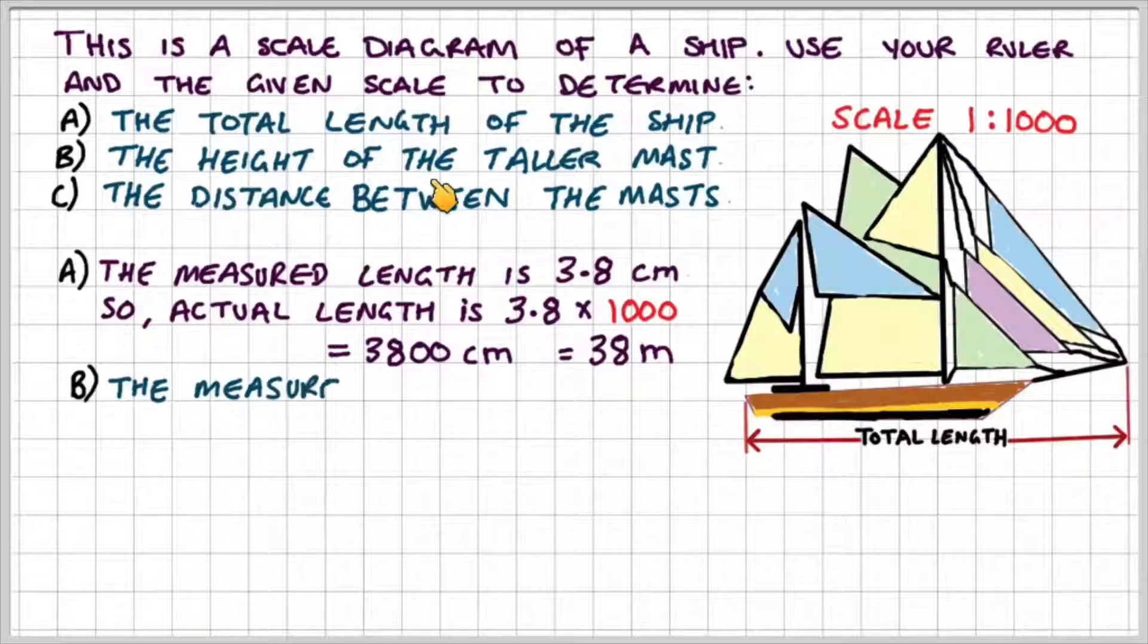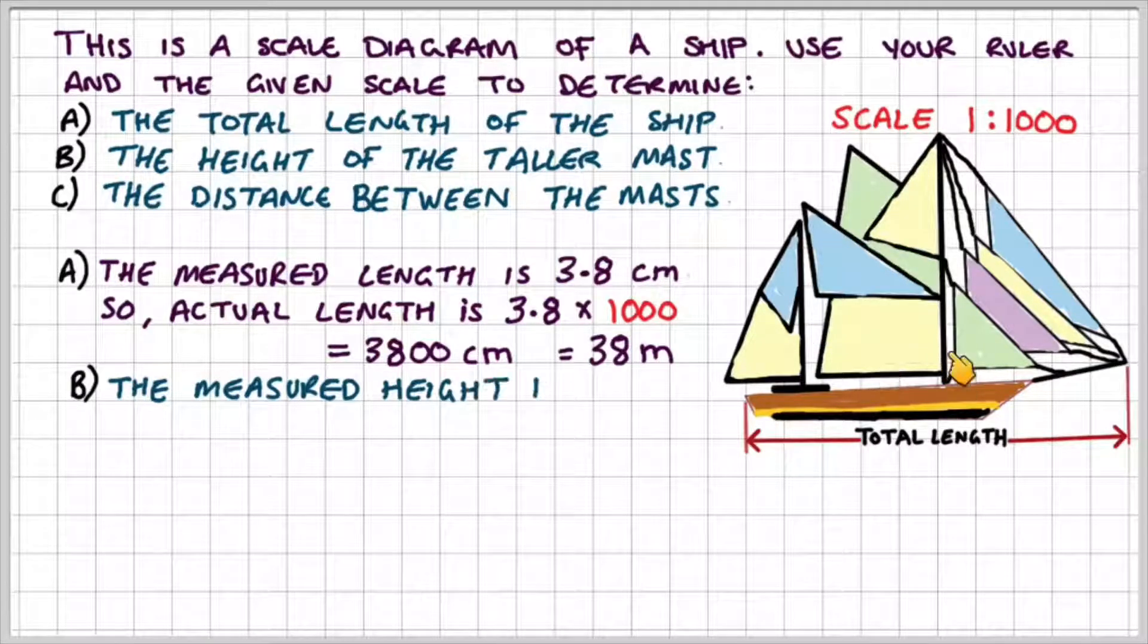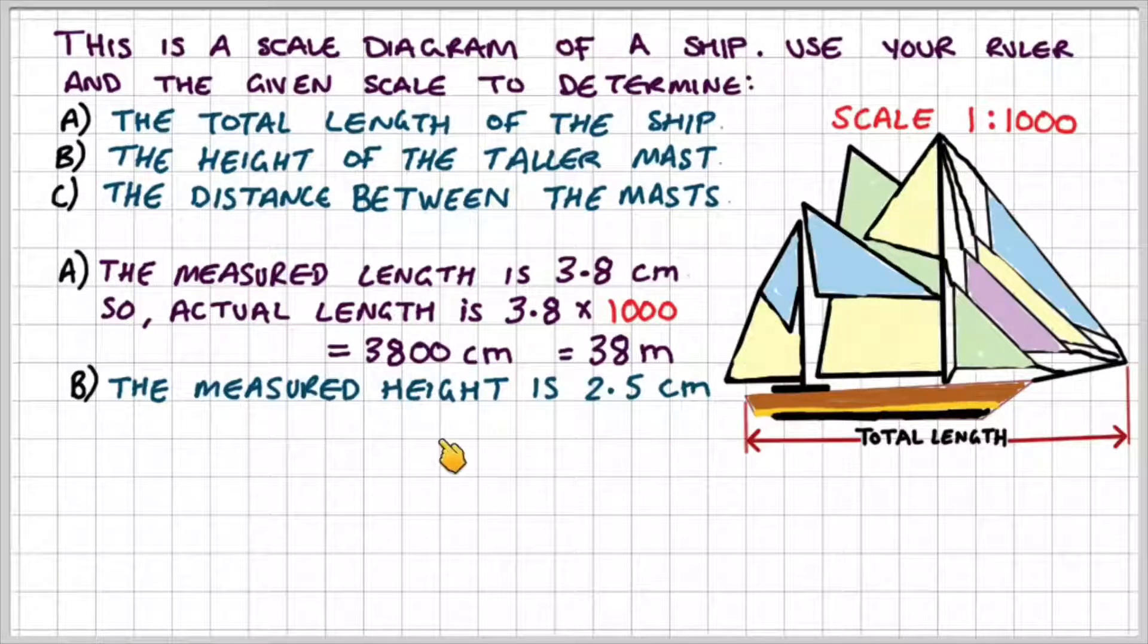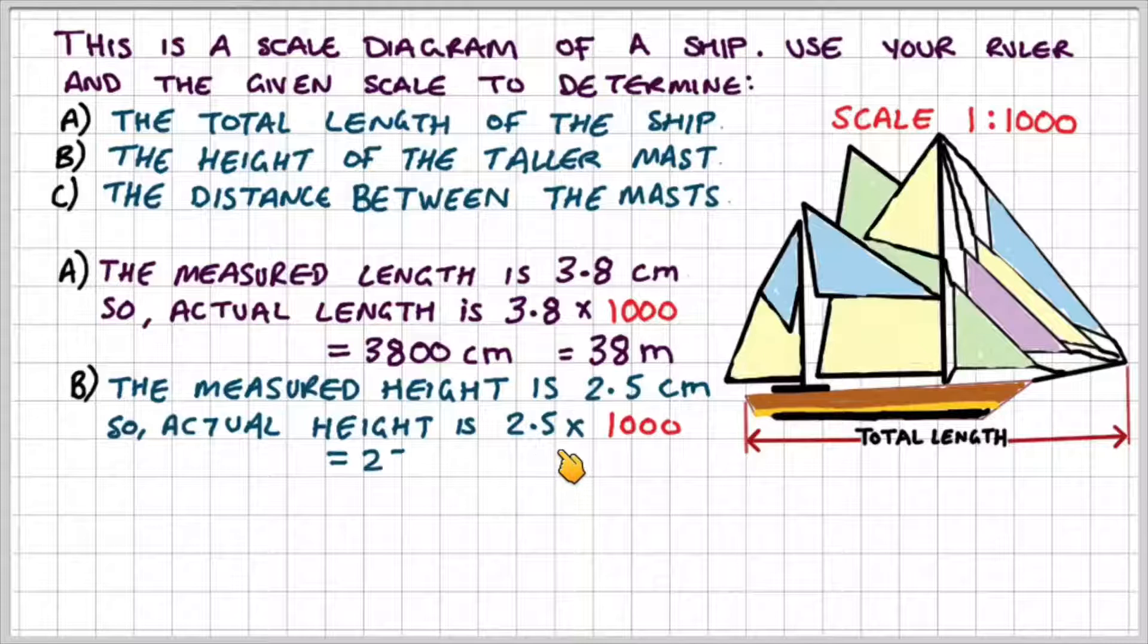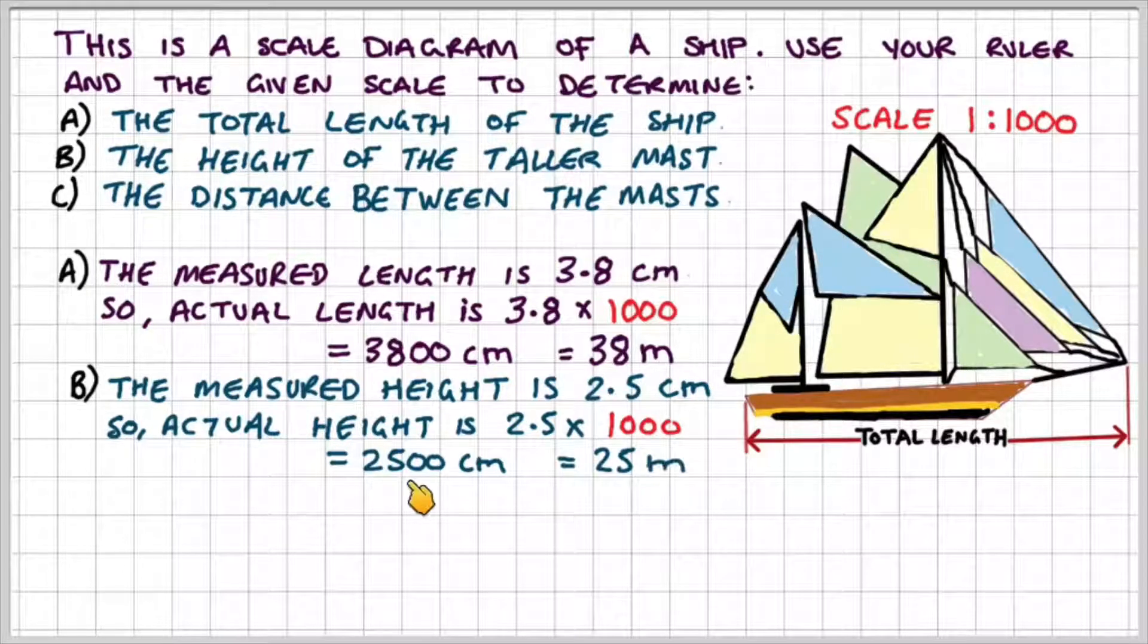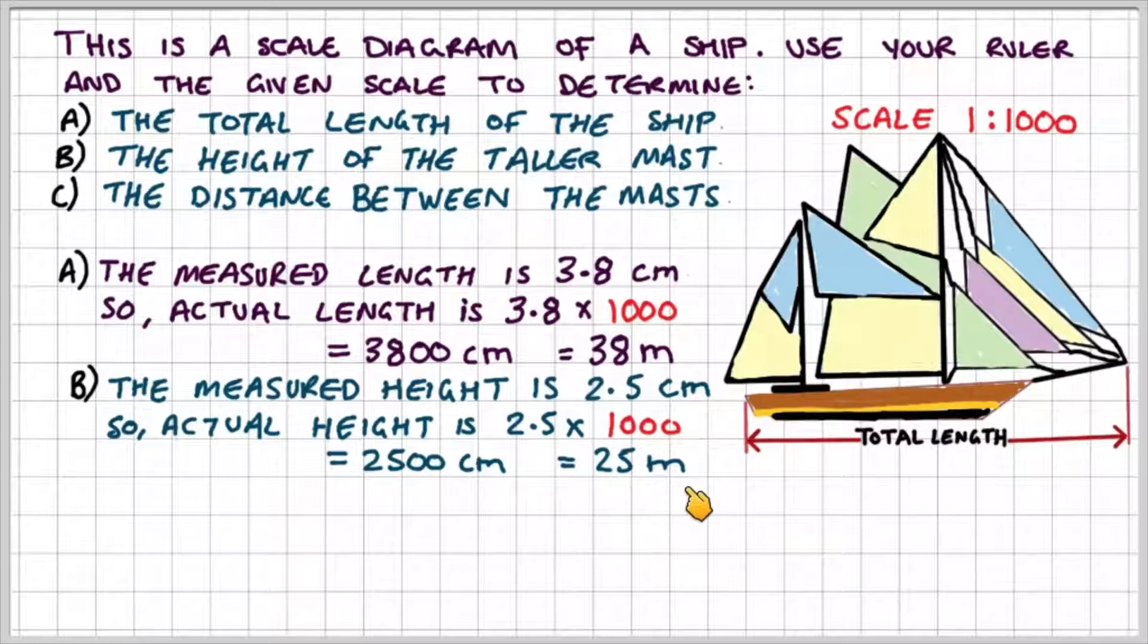Now for part b the height of the taller mast, so this is the taller mast, I measured a total height of 2.5 centimeters which then would give me an actual height of 2.5 times a thousand which is 2,500 centimeters or 25 meters.